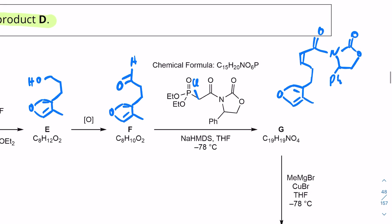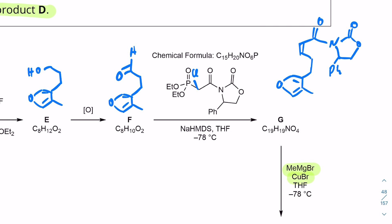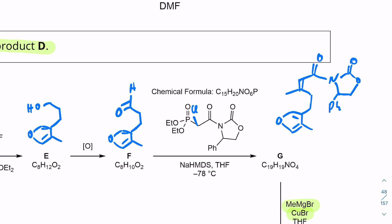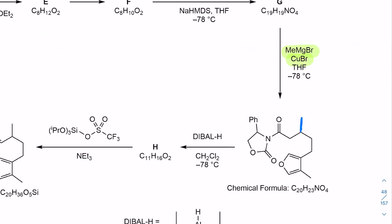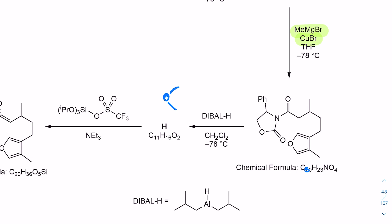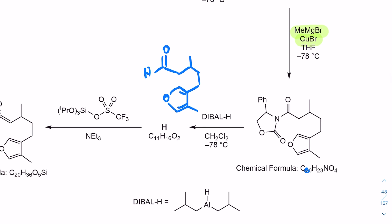With DIBAL, we remove 9 carbons, several hydrogens, and 2 oxygens. DIBAL is used to reduce esters and amides to aldehydes. We have an amide here and it gets reduced to an aldehyde — so we cut that portion off and replace it with a hydrogen. Molecular formula check: 11 carbons, 16 hydrogens, 2 oxygens — correct. So that is compound H.